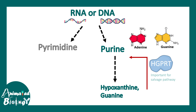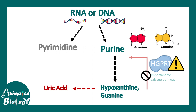Now if there is some error with the HGPRT gene, the purine salvage pathway will not work. In that situation, hypoxanthine and guanine will be repurposed to form uric acid, and there will be an increase in the amount of uric acid in the body tissues.